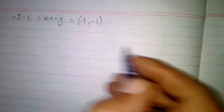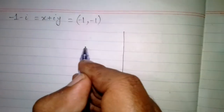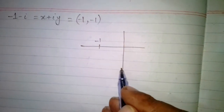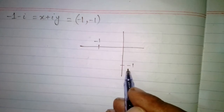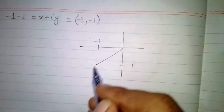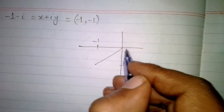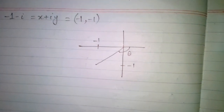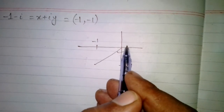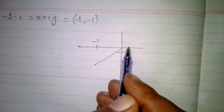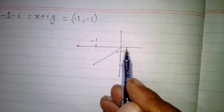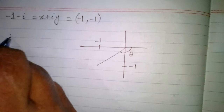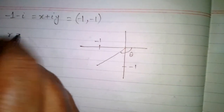This complex number can be expressed as a point on the plane where the x component is minus 1 and the y component is also minus 1. If we plot this point on the complex plane, it lies in the third quadrant, making an angle theta with the positive x axis. We take the clockwise angle, which is less than pi.